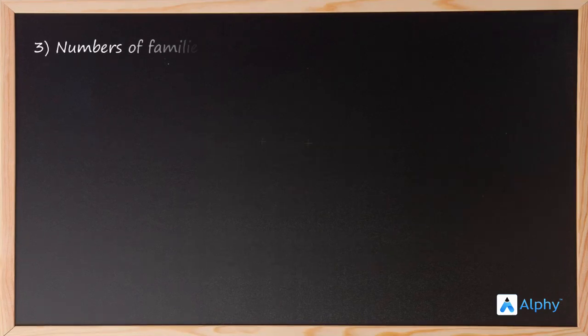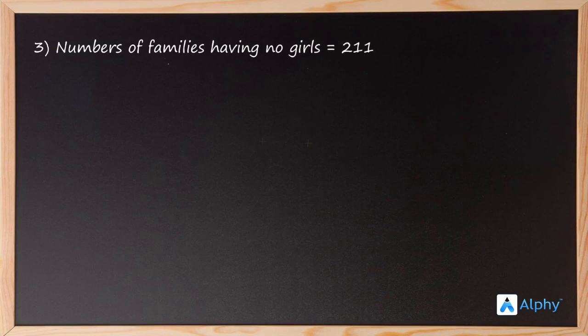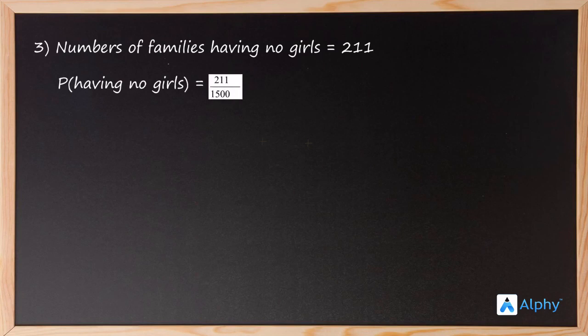In the third event, the number of families having no girls is 211. So the probability of having no girls is equal to 211 by 1500.